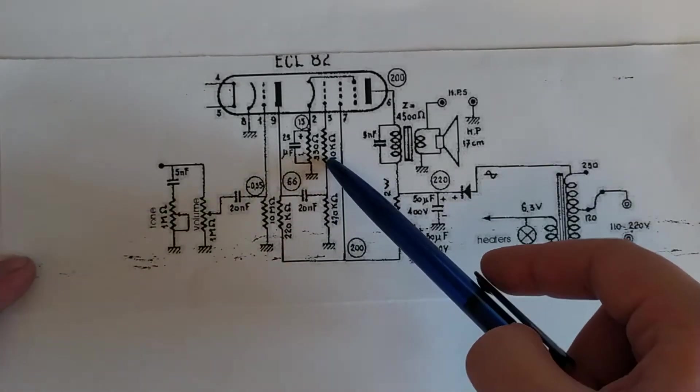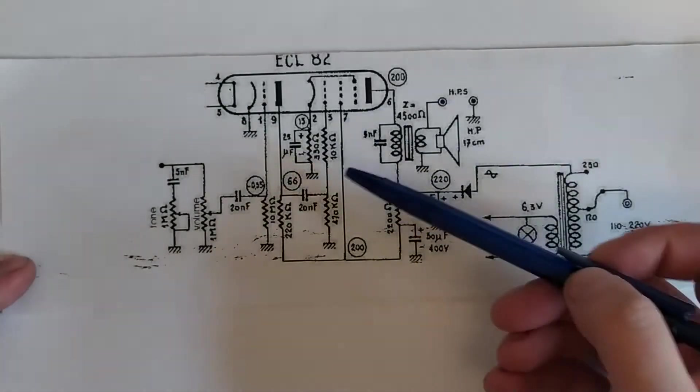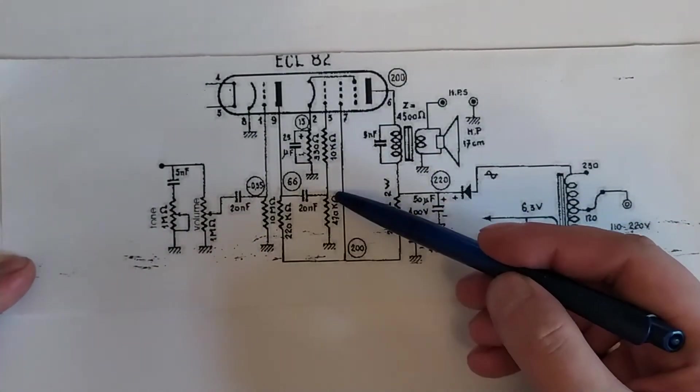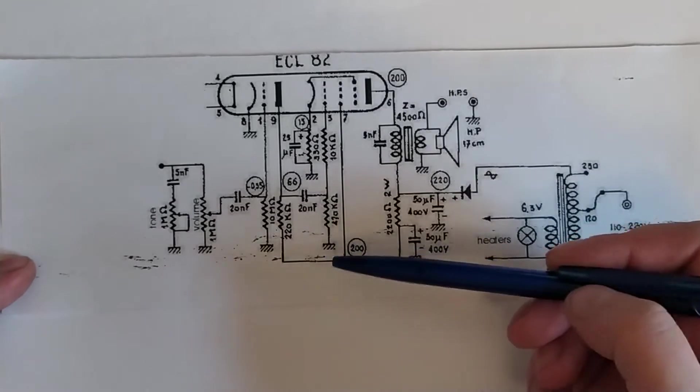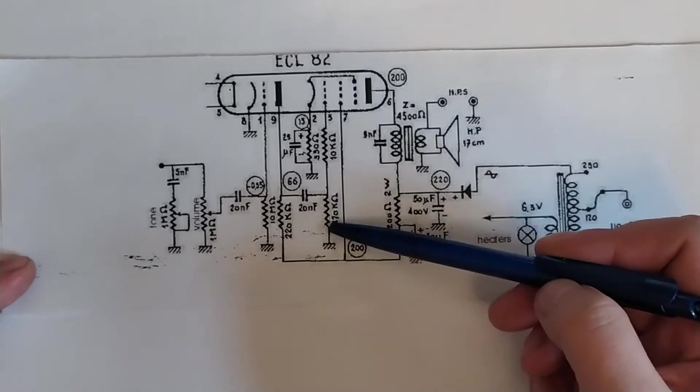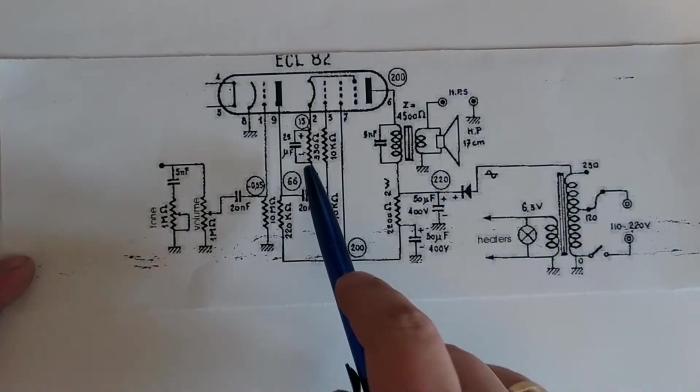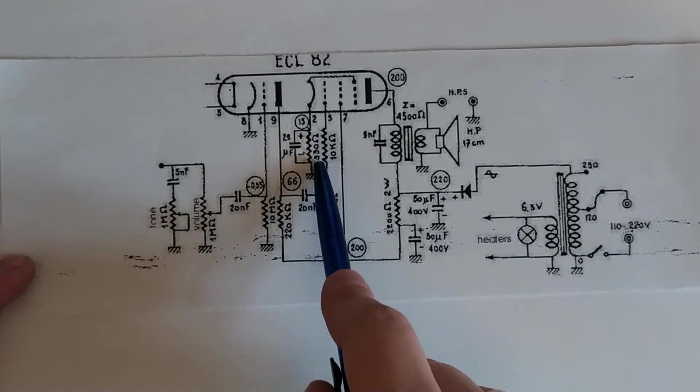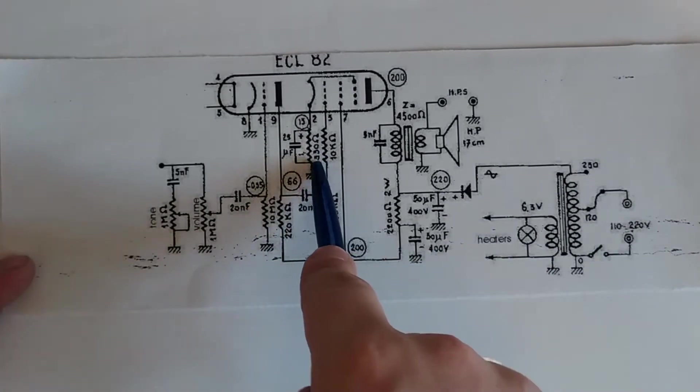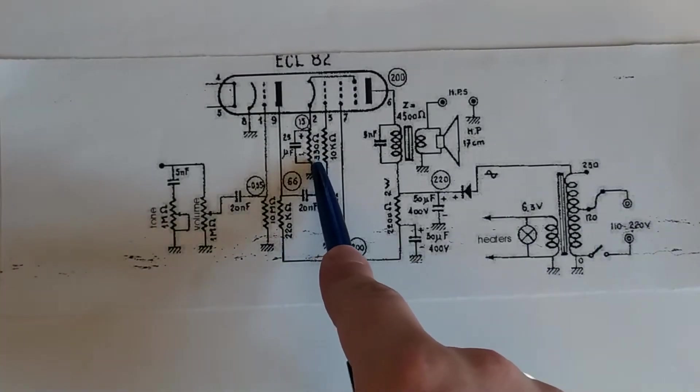470 kilo ohms of grid pulldown resistor also sounds fine. 330 ohms, we'll just have to take their word for it. We could also draw a load line and see, but that should work out fine.